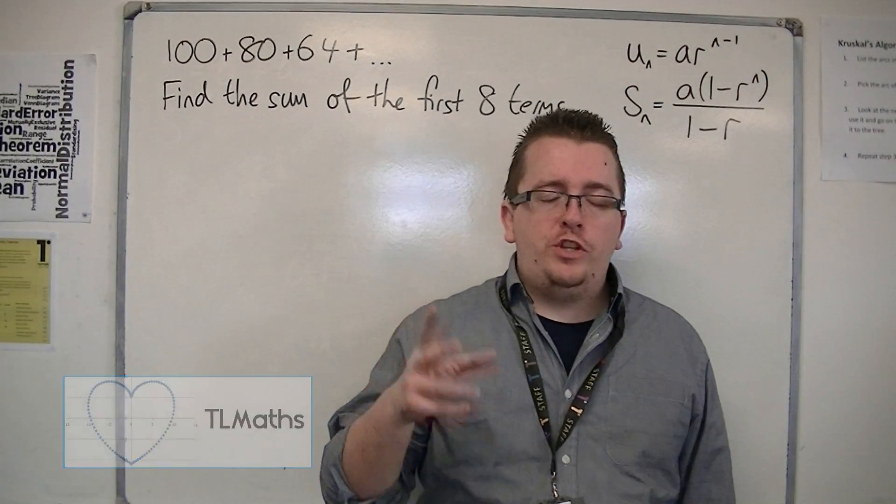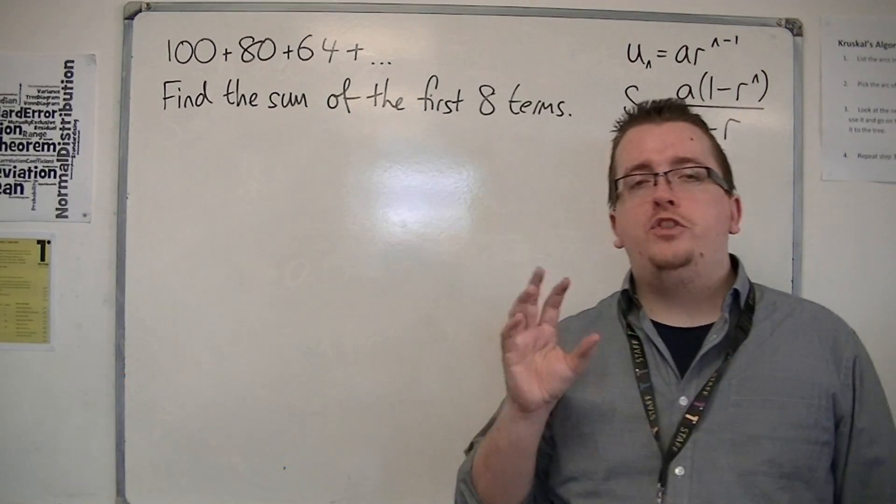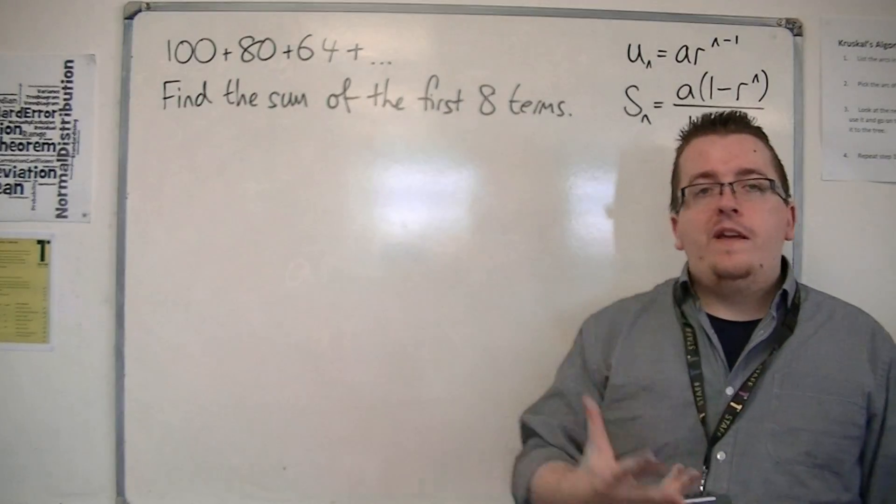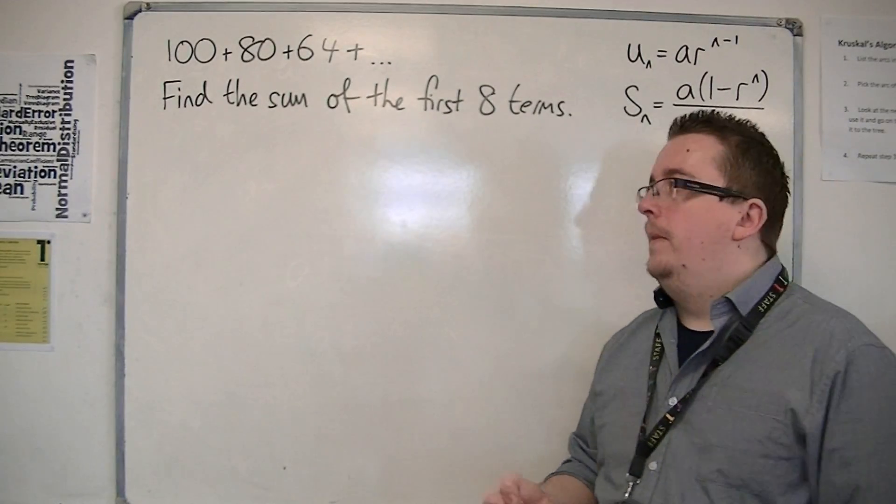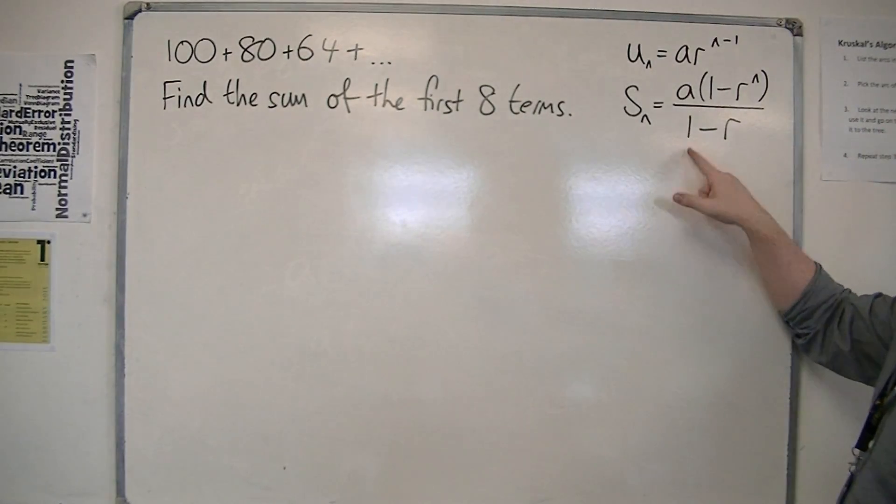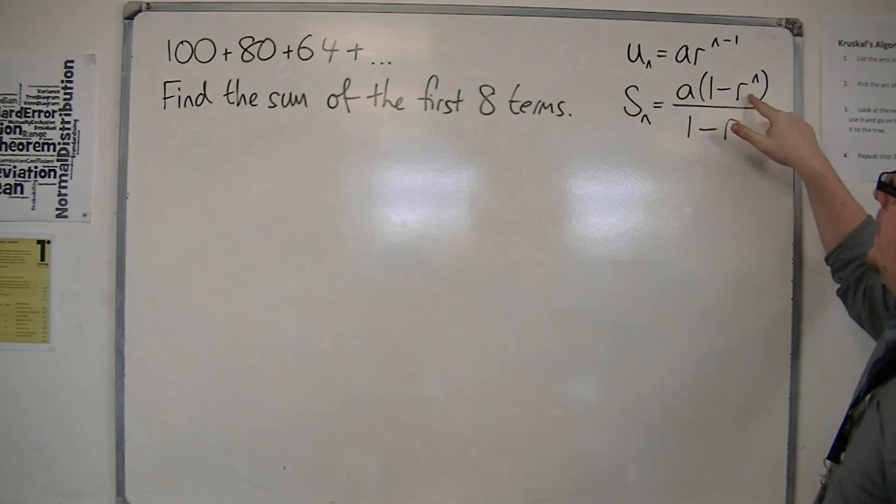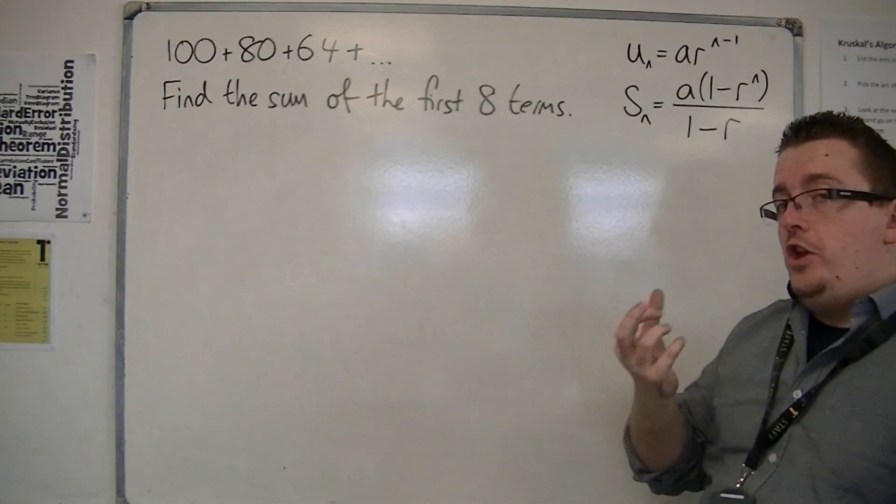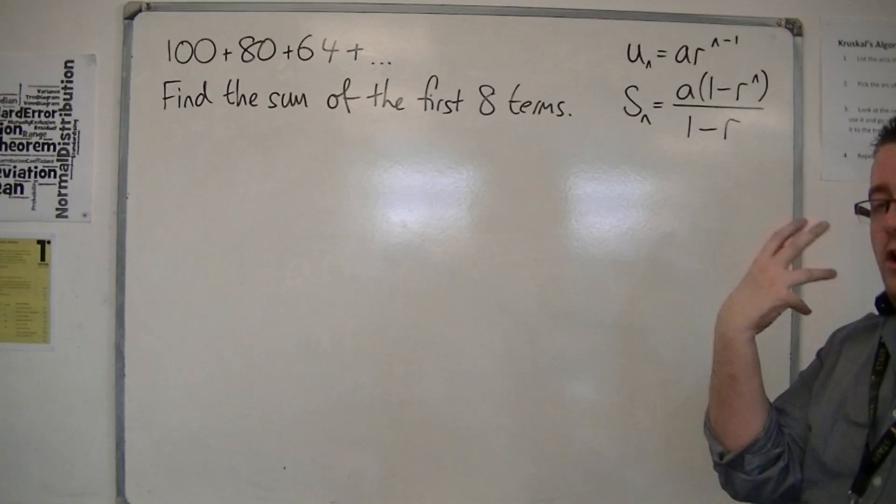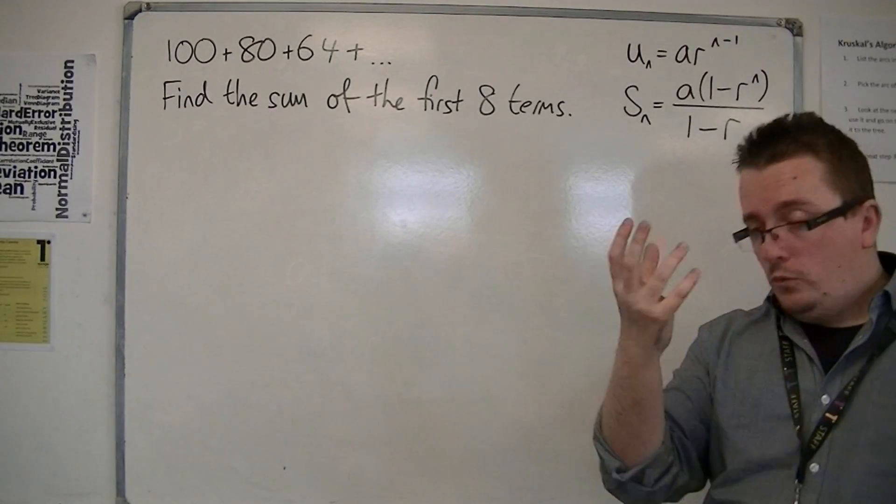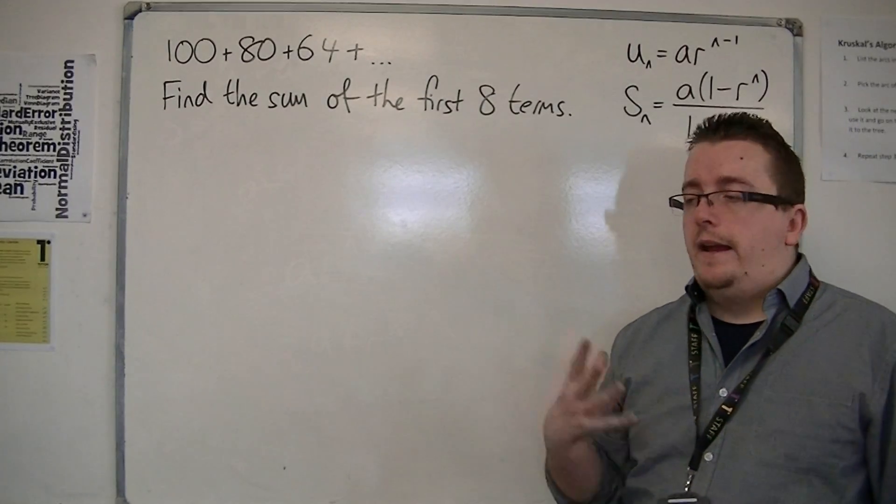In the previous video I introduced how we work with geometric series, where that original formula comes from. So Sn is equal to A1 times 1 minus R to the n over 1 minus R, or you can have R to the n minus 1 over R minus 1. You can have it whichever way around you like to use, it doesn't matter.